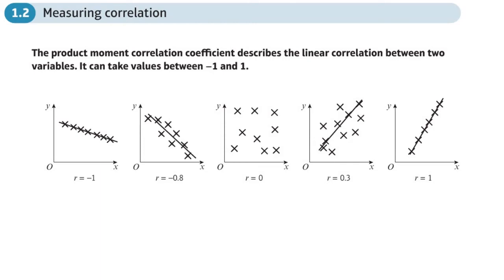At GCSE, when you wanted to find the correlation of some data, what we call bivariate data—two sets of numbers linked to one another, like height and weight—what you had to do was to draw a scatter diagram and then look at it and say, 'that's a positive correlation' or 'that's a negative correlation.' You might even have commented on the strength of the correlation.